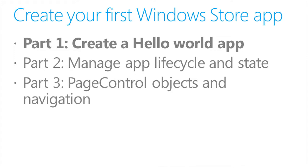In part two, Manage App Lifecycle and State, we'll discuss the app lifecycle and extend the Hello World app by storing app data in Windows roaming settings and saving session state data using the WinJS application session state object. In part three, Page Control Objects and Navigation, we'll migrate our app to use the navigation app template and page control objects, and add an app bar to navigate between pages using the WinJS navigation service.